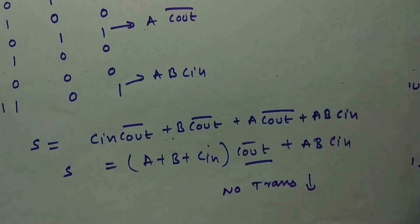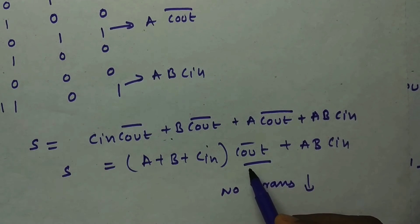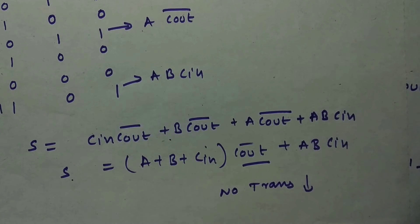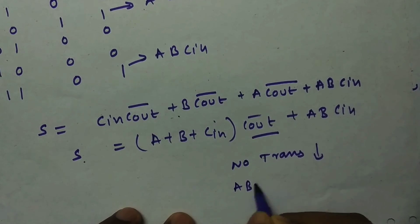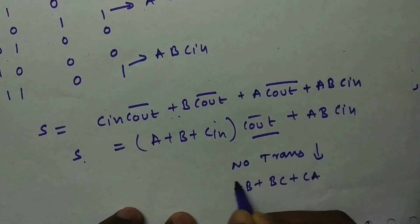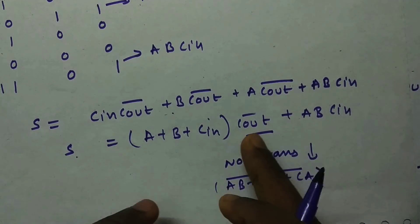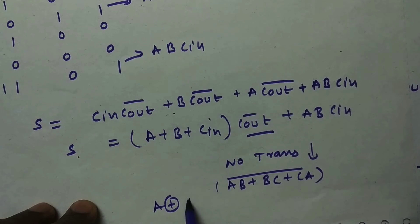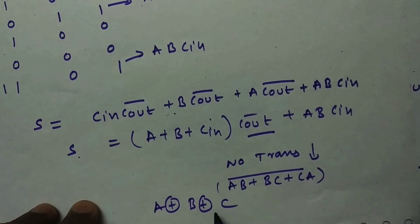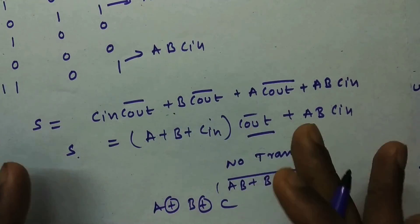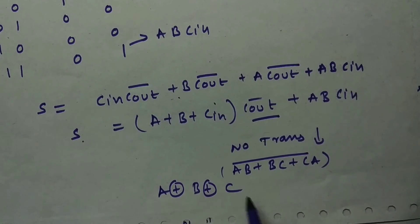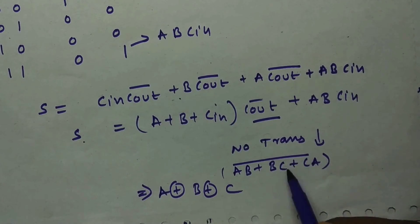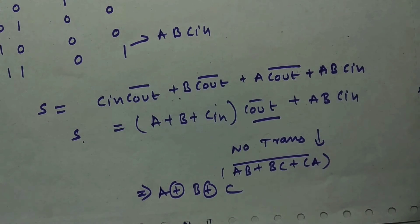Using Cout_bar as the input for Sum saves us five to ten or more transistors compared to implementing A XOR B XOR Cin directly. If you want to verify, substitute Cout_bar = complement of (AB + BCin + CinA) and simplify — you'll get exactly A XOR B XOR Cin. The form has changed but the equation is equivalent. The key equation is: (A + B + Cin)·Cout_bar + A·B·Cin.